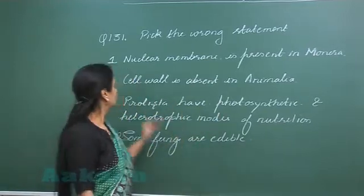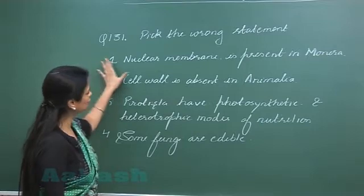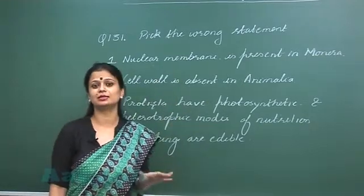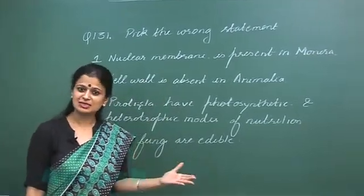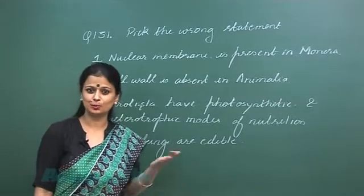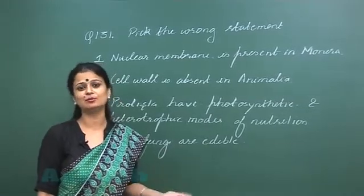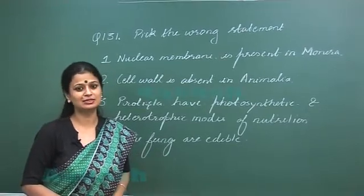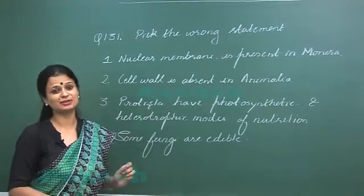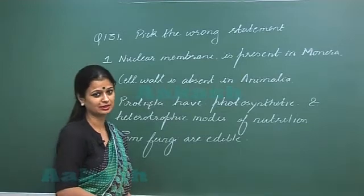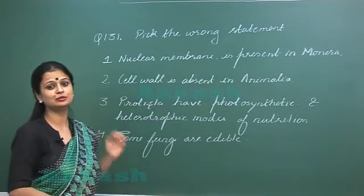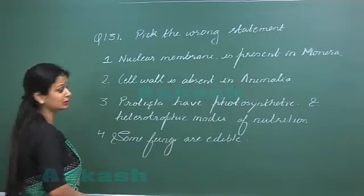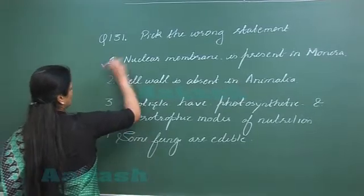Now coming to the first option: nuclear membrane is present in monera. Again, this statement I have discussed in one of the questions. In the monera, in the prokaryotes, the membrane bound organelles they are absent. The primitive nucleus is present and that is known as a nucleoid, and it is without the nuclear membrane. So the wrong option here is option number one.